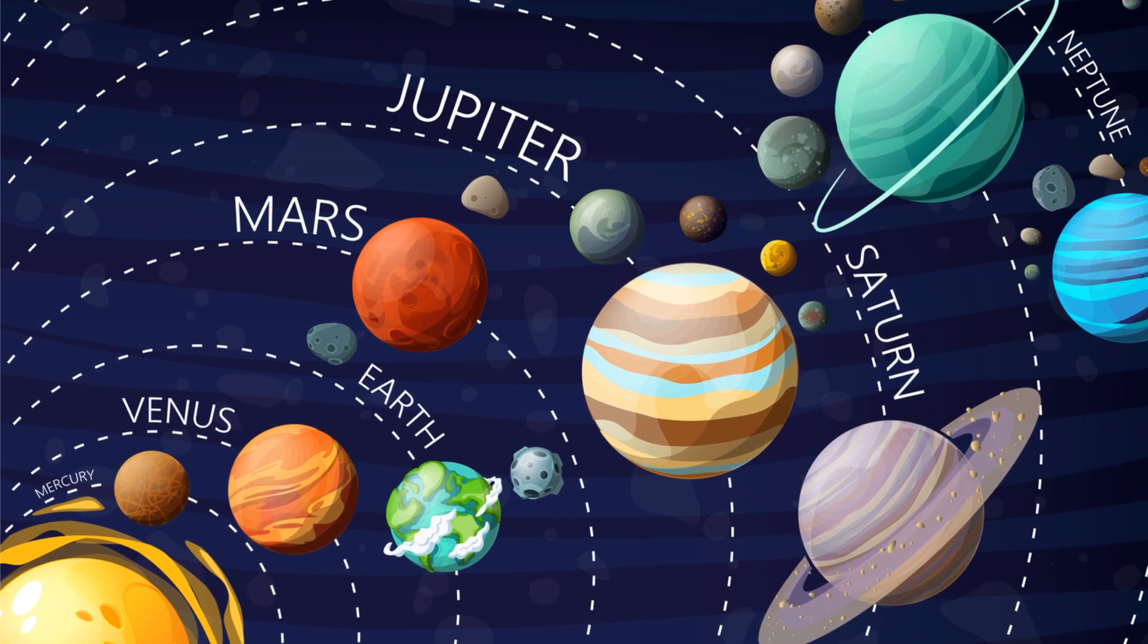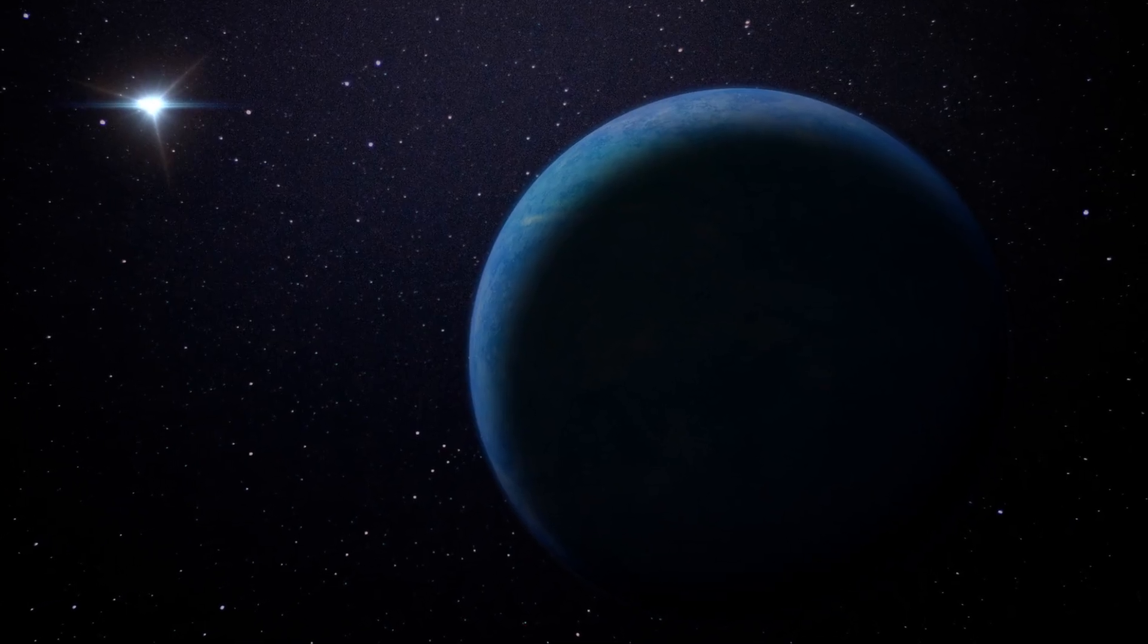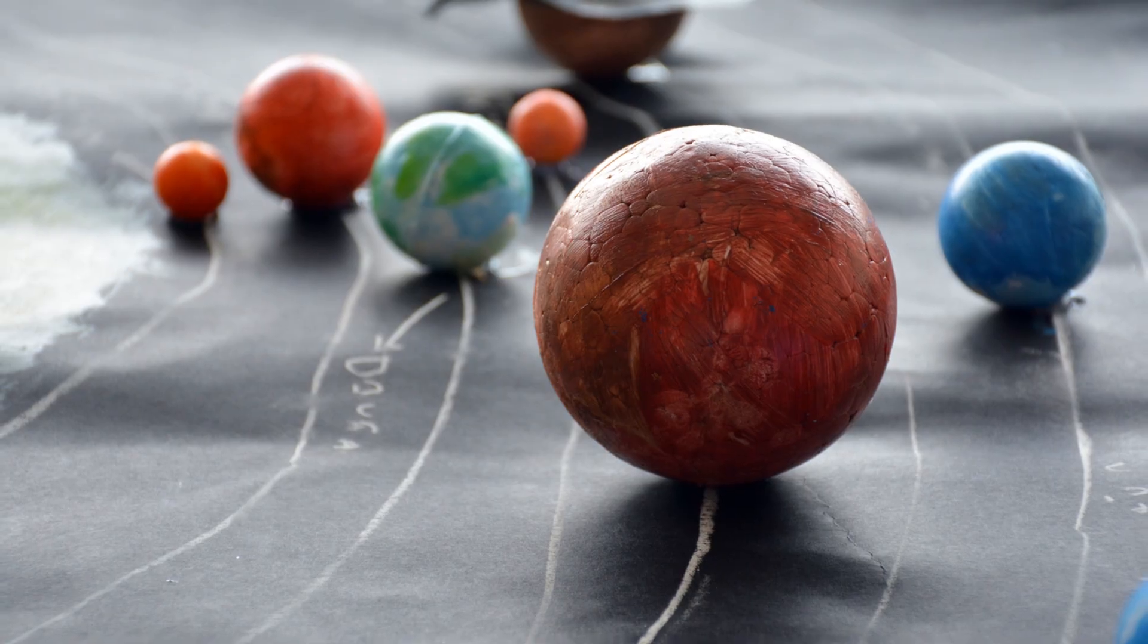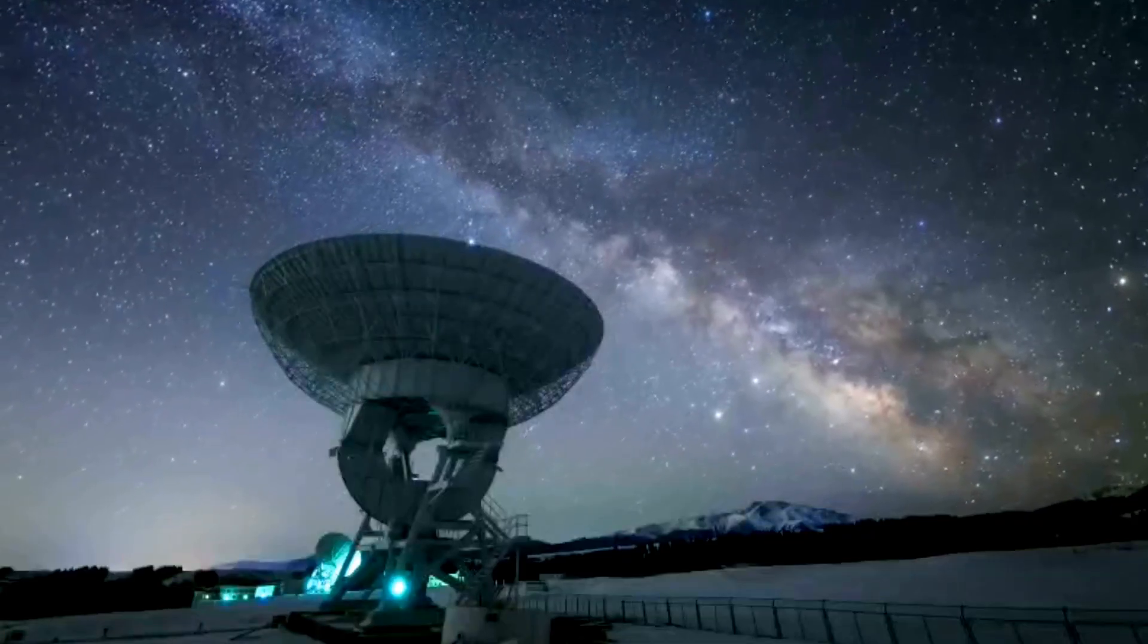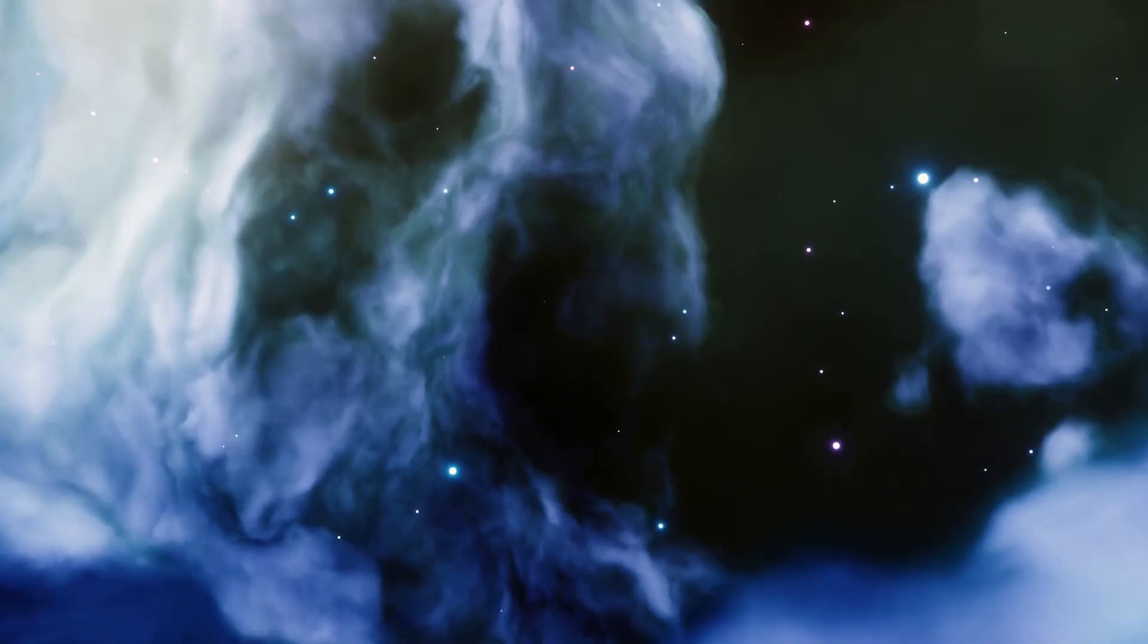Something massive was hiding. Back in 2016, astronomers announced a suspect, Planet 9, a 10-Earth-mass giant far beyond Pluto. Telescopes hunted for years: nothing, no light, no movement, just silence.